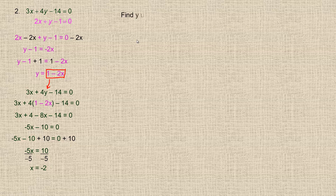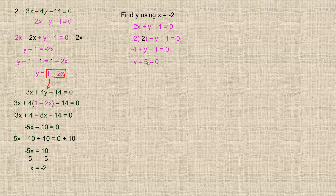Now I find y by substituting x equals negative 2 into the second equation. So 2 times negative 2 plus y minus 1 equals 0, which is negative 4 plus y minus 1 equals 0, or y minus 5 equals 0. Adding 5 to both sides gives y equals 5. So I think the solution is x equals negative 2 and y equals 5.